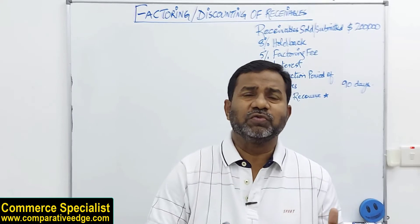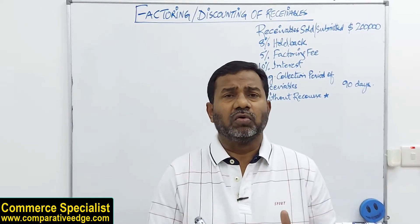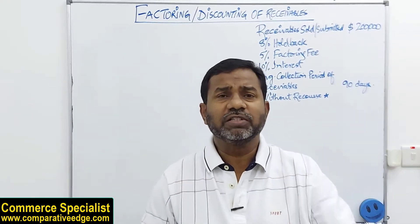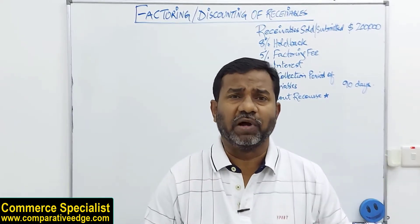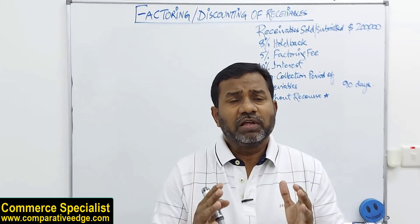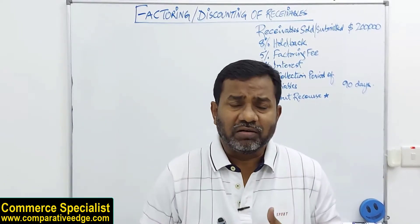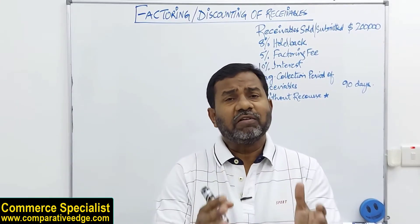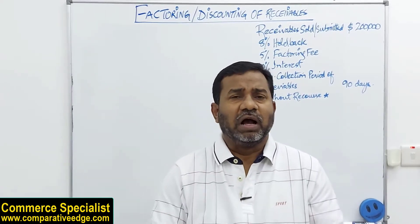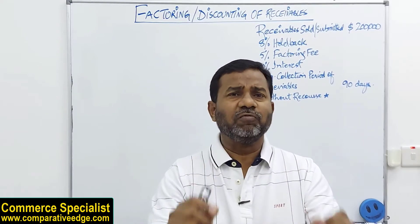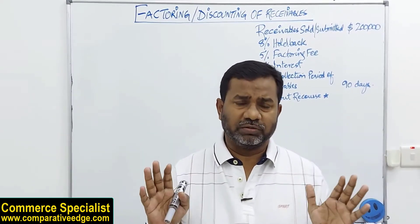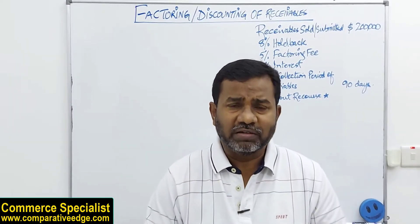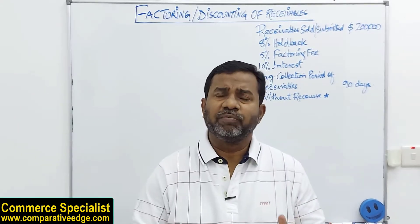Broadly speaking there are two types of factoring: with recourse and without recourse. With recourse means when the factoring company collects receivables from our customers and there are some bad debts, the seller — that is, my company — is responsible for those bad debts. Without recourse means once I have sold my receivables to the factoring company, the risk of bad debts is theirs and I have nothing to do with it. Obviously factoring without recourse would be a little more expensive because the factoring company will factor in the risk of bad debts in the arrangement.